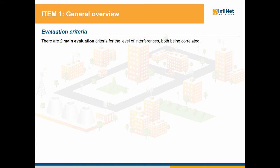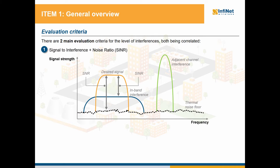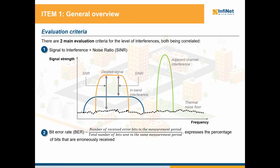There are two main evaluation criteria for the level of interferences. The first one is the signal to noise plus interference ratio, which you might also know as channel to noise plus interference ratio. As we can see in the picture, the lowest level is the noise floor representing the background radiation uncorrelated with the useful signal. Besides this, an in-band interference is present, and in order to correctly evaluate the quality of the channel, the signal to interference plus noise ratio should be taken into account and not just the signal to noise ratio.